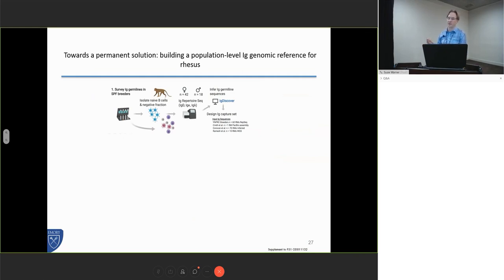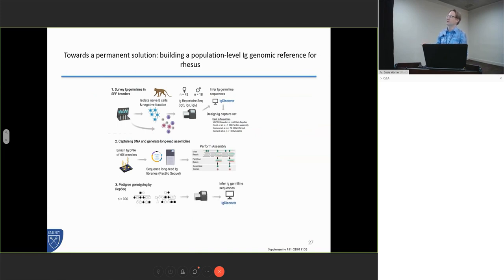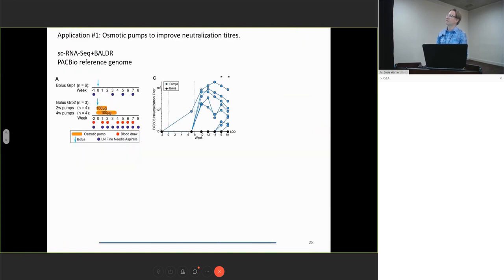We've recently been able to get funding to try and build a reference assembly. This leverages the genetics and parentage that we have at the Yerkes Primate Center with long read sequencing. The gist of it is that we sort out naive B cells and non-B cells, we do rep-seq to get a big library of potential V genes, we use this to build a capture array, pull down DNA sequences and do PacBio sequencing, and then we can go back and use that to inform the haplotypes of a number of the offspring monkeys.